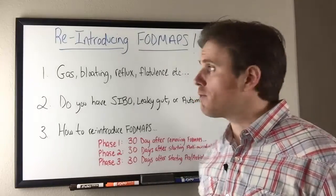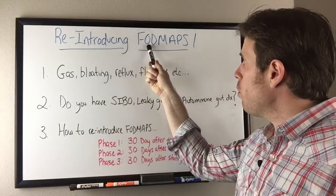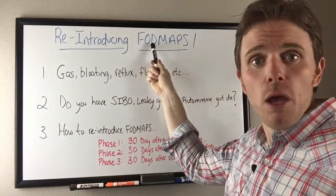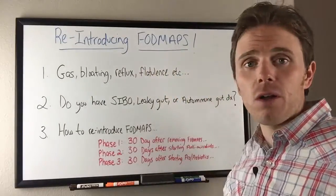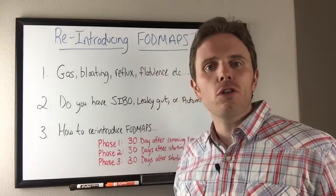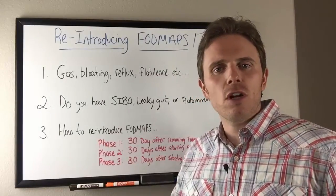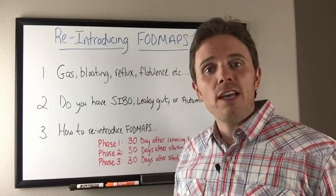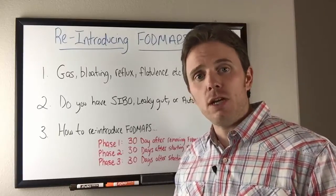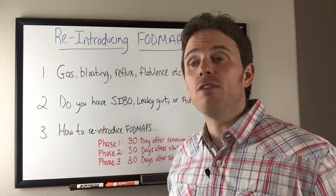So what are FODMAPs? FODMAPs are fermentable oligosaccharides, disaccharides, monosaccharides, and polyols. They're just certain sugars that are found in certain fruits, vegetables, and starches that can potentially feed bad bacteria in susceptible individuals.